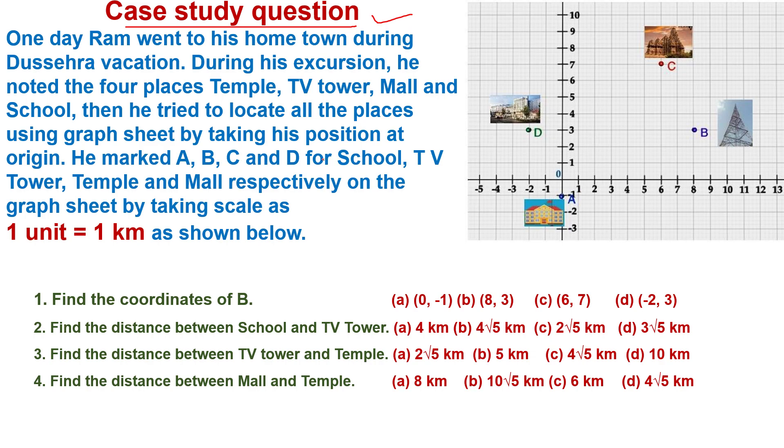Then he tried to locate all the places using graph sheet by taking his position at origin. He marked A, B, C, and D for school, TV tower, temple, and mall respectively on the graph sheet.